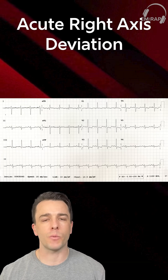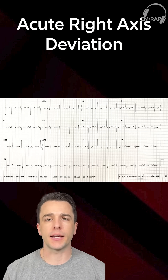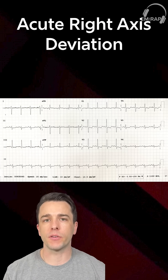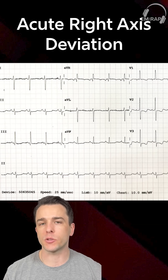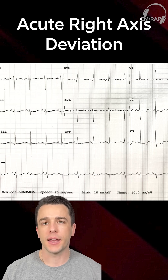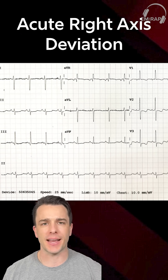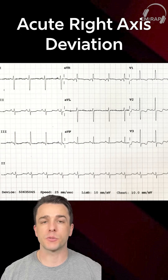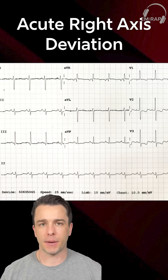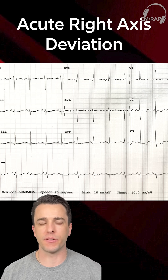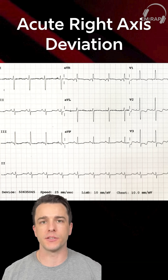With PE, we can see a lot of different changes. One of the most common findings are T wave inversions in the precordial leads as well as in the inferior leads. That helps us differentiate it from ACS, which is more commonly found in the precordial leads as biphasic T wave inversions consistent with Wellens syndrome.